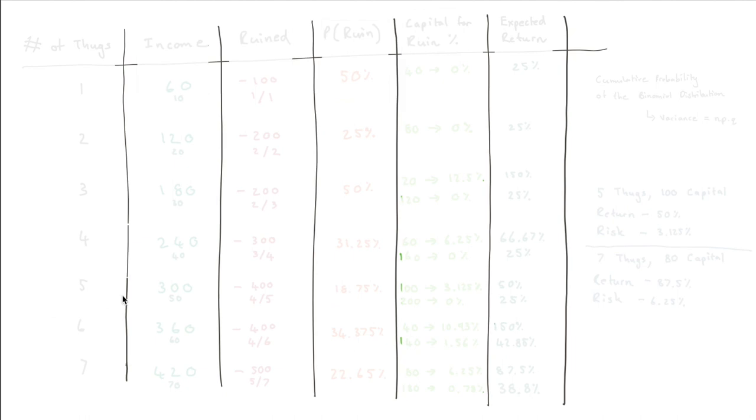So what I've done is I've drawn out this table. And in the first column, we've just got the bunch of thugs that we're playing against. So we either play against one thug or we can play all the way up to seven thugs. And we can see that this is the income that we're making. So the 60, 120, 180, all the way up to 420, that is the fact that each thug is playing $60 in order to play the game.